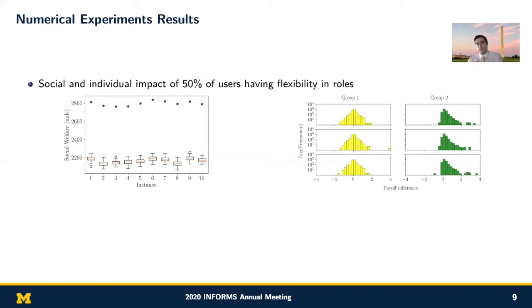Also, in the right figure, we have described two groups of individuals. The first group is representing those users who have fixed roles in both models. In the second group, there are those users that have fixed roles in the first model and flexible roles in the second model. And as you see, in group one, they don't experience a significant difference between the payoffs under the two models. But the second group actually experienced a higher payoff almost for all of them in the model with role flexibility.